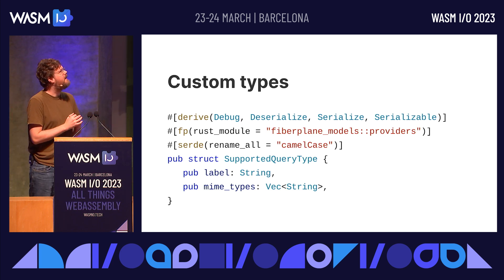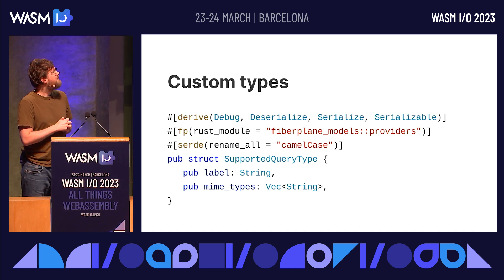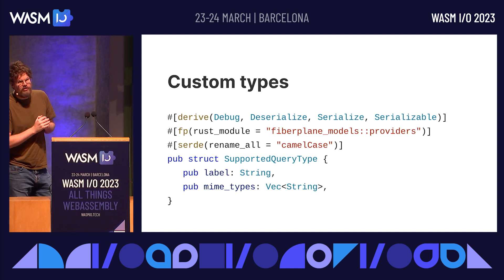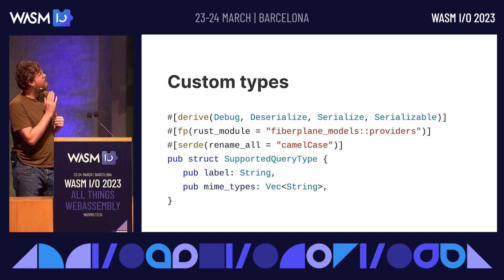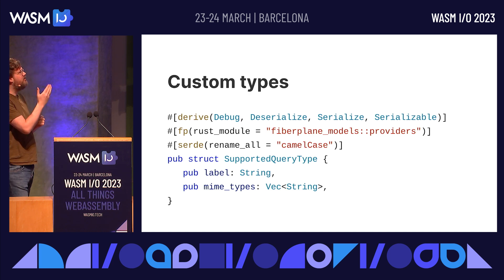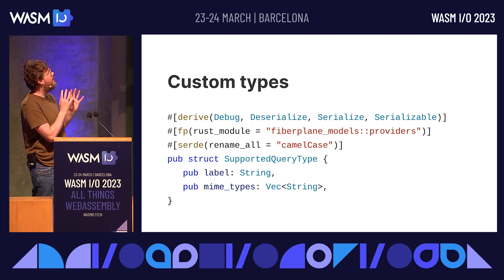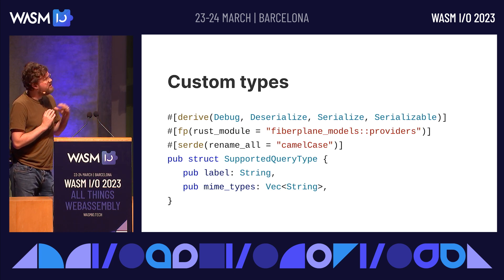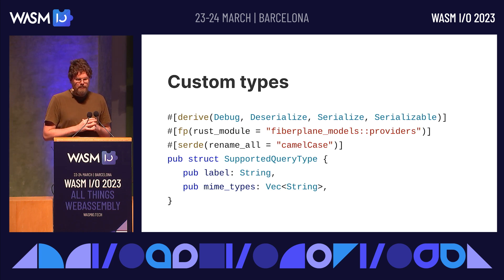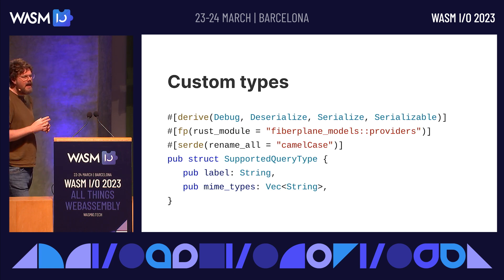The serializable trait is the main thing you need to derive on your custom types for them to work with the FP bindgen protocol. Most of the time it's as simple as adding a derive macro to your types. We've already done that for built-in Rust types such as vectors, maps, booleans, and other common types, so you really only need to focus on your own custom types. There's also an optional rust module annotation that you'll most often want to use.